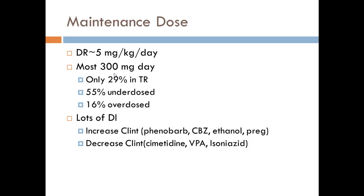There are lots of drug interactions that occur with this drug that increase and decrease the intrinsic clearance. Phenobarbitol, carbamazepine, ethanol, and pregnancy will all increase the intrinsic clearance of phenytoin. Cimetidine, valproic acid, and isoniazid will all decrease the intrinsic clearance. The anti-epileptics are known to increase enzyme activity other than valproic acid, which actually inhibits enzyme activity.